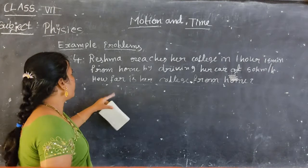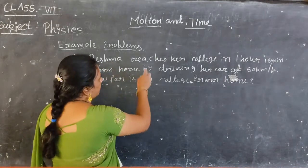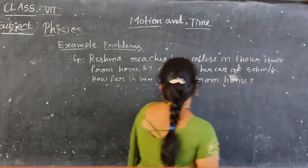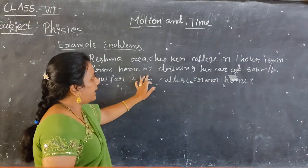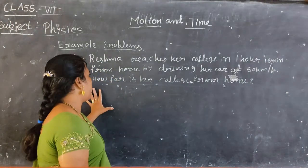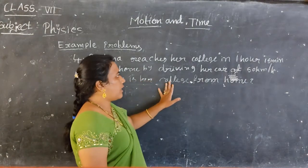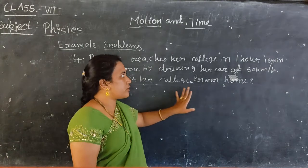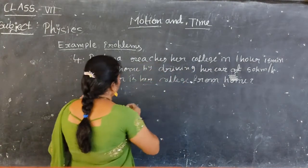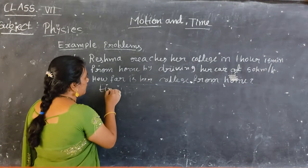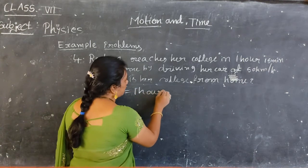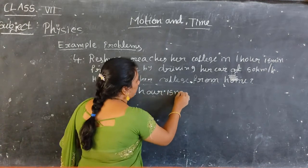Coming to the fourth problem: Reshma reaches her college in 1 hour 15 minutes from home by driving her car at 50 kilometers per hour. How far is her college from home? The given values: time is equal to 1 hour 15 minutes.